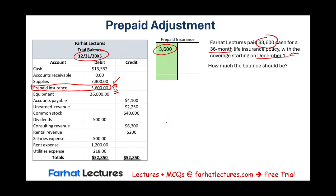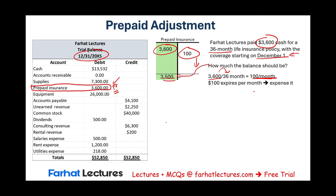How much should the balance be? If I paid $3,600 for a policy lasting 36 months, I expense $100 per month. That means I need to reduce my prepaid insurance by $100, so the balance should be $3,500. When I reduce it, I need to expense it — I credit prepaid insurance and debit insurance expense. Now my insurance expense is $100.